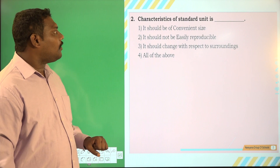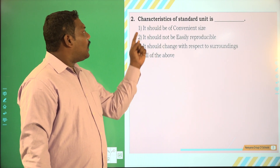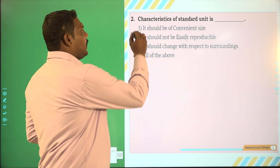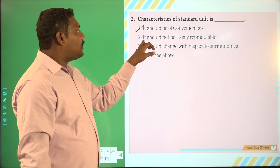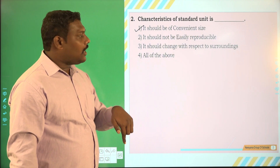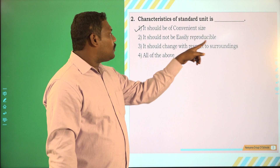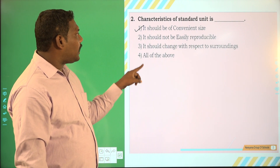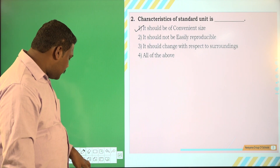Let us go to the second question. The characteristics of standard unit: it should not be of convenient size — No, it should be of convenient size. It should not be easily reproducible — No, it should be easily reproducible. It should change with respect to surroundings — No, it should not change. So the correct answer is: it should be of convenient size.